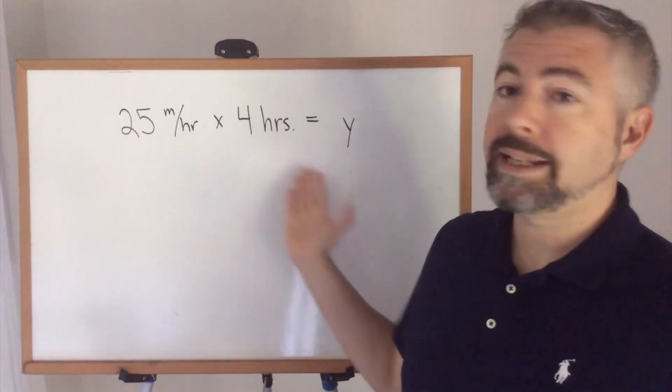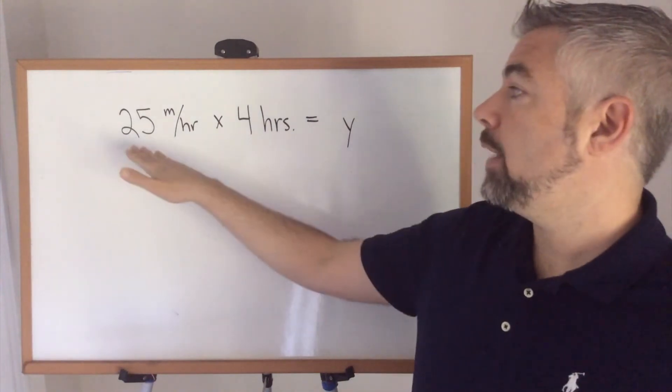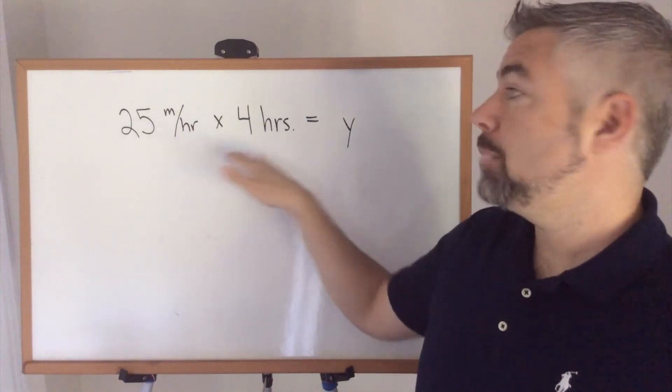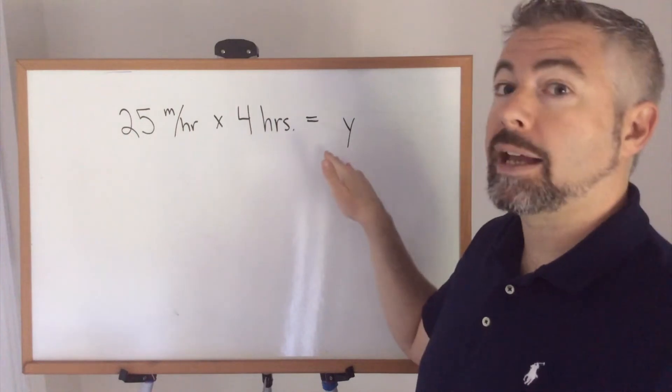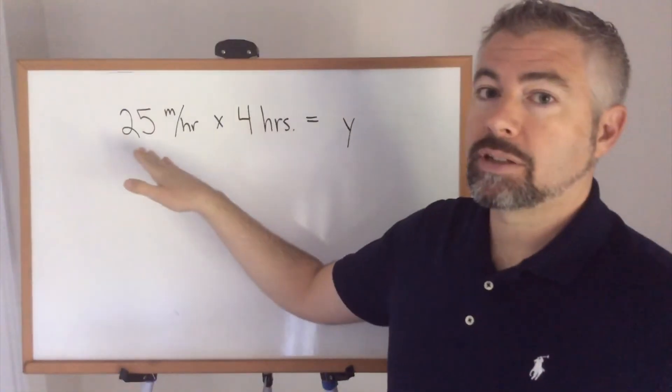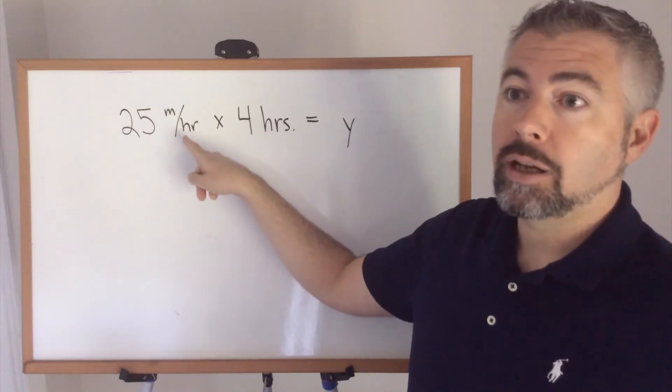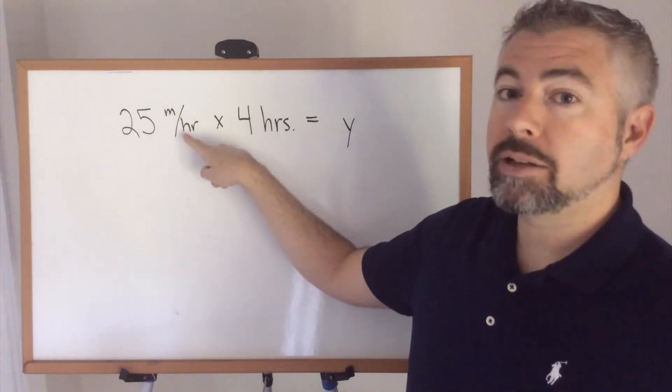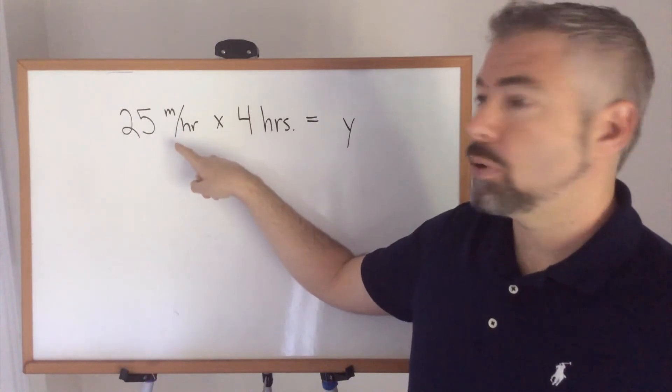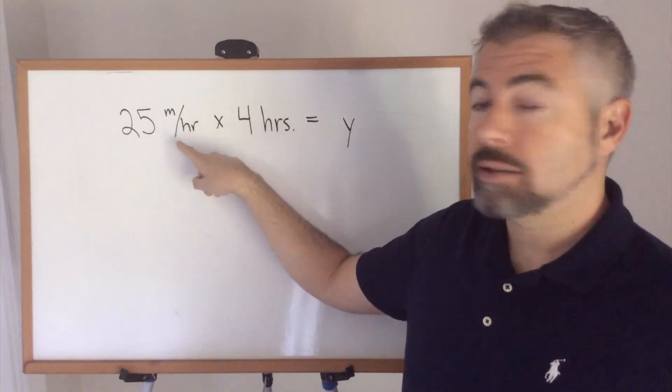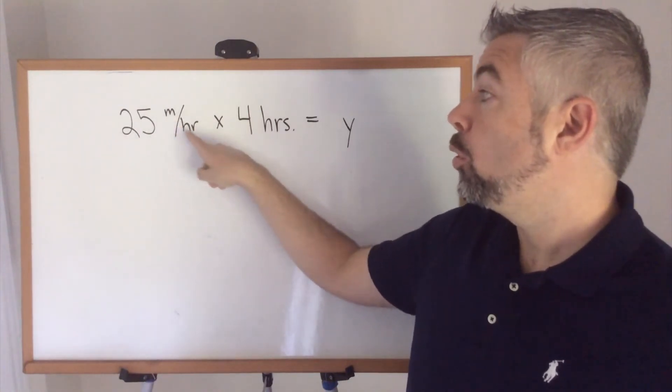I've set up a simple rate equation here, where I have 25 miles per hour times 4 hours equals y. Now, 25 doesn't look like a fraction, but it's actually the unit that's a fraction. It looks like a whole number because our denominator is one hour. This is what makes this a unit rate, because it's 25 miles per one hour.